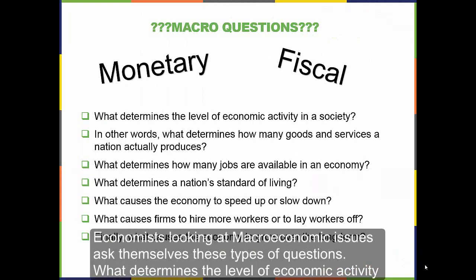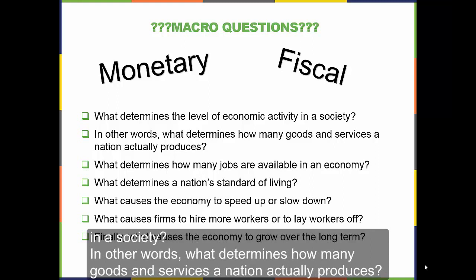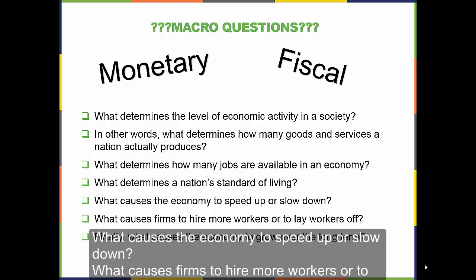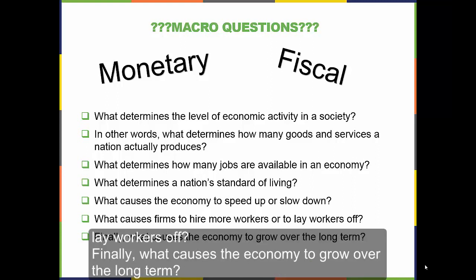Economists looking at macroeconomic issues ask themselves these types of questions: What determines the level of economic activity in a society — in other words, what determines how many goods and services a nation actually produces? What determines how many jobs are available in the economy? What determines a nation's standard of living? What causes the economy to speed up or slow down? What causes firms to hire more workers or to lay workers off? Finally, what causes the economy to grow over the long term?